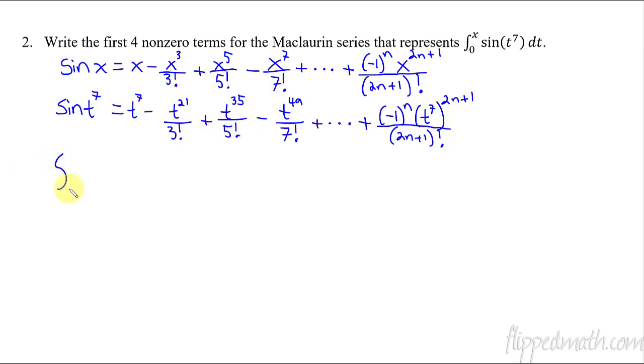And so what we're going to say is the integral from 0 to x of sine of t to the 7th is going to equal, and then you do each one of these term by term. So the first one is just t to the 8th over 8.